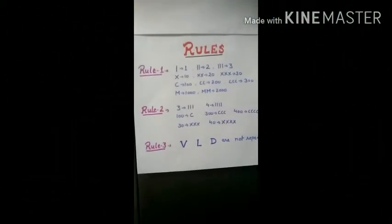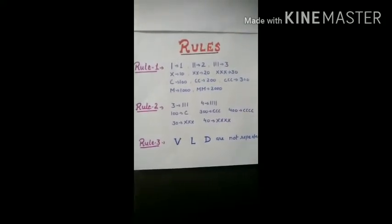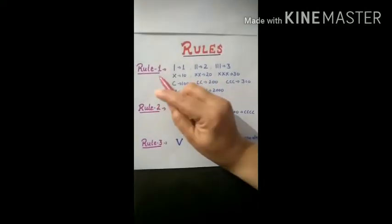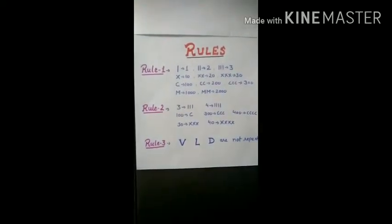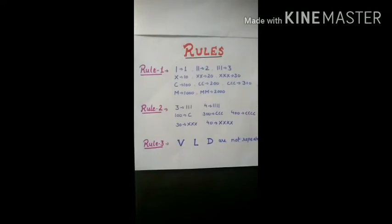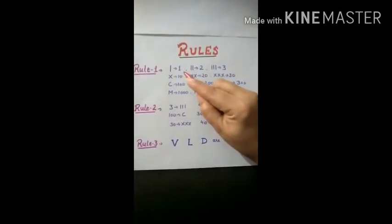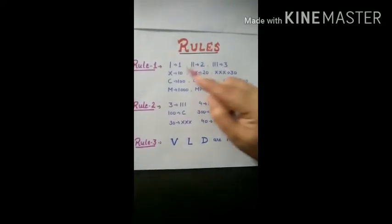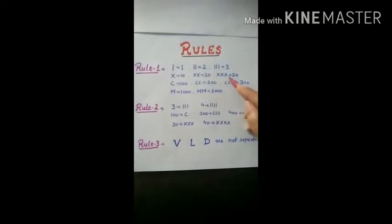Here students, Roman numerals are formed with the help of some rules. I am explaining you the rules with the help of which we can form Roman numerals. The first rule is, if we repeat any symbol, it represents addition of number. See, with example, one I is 1, two I is 2, three I is 3, one X is 10, two X is 20, three X is 30.